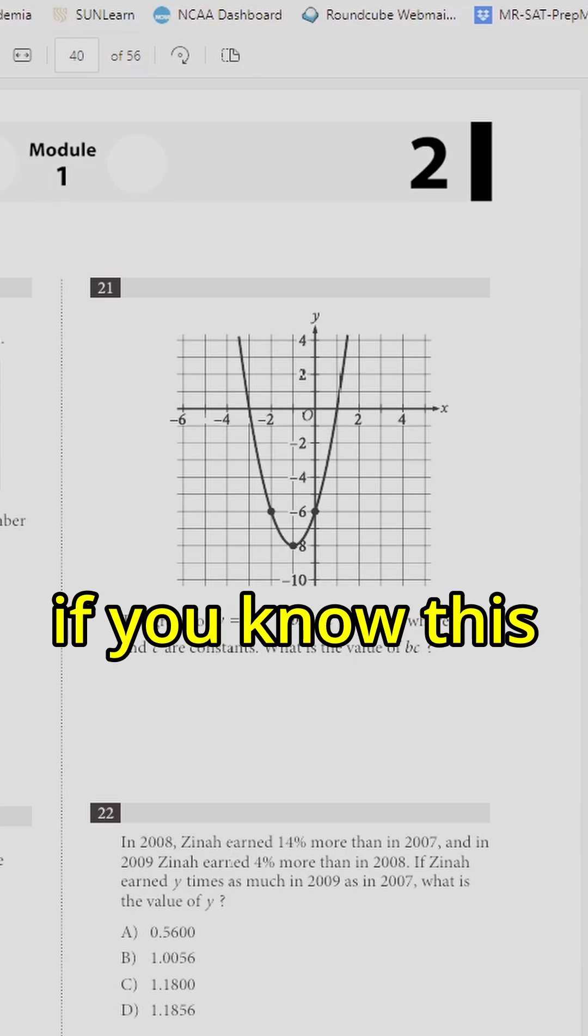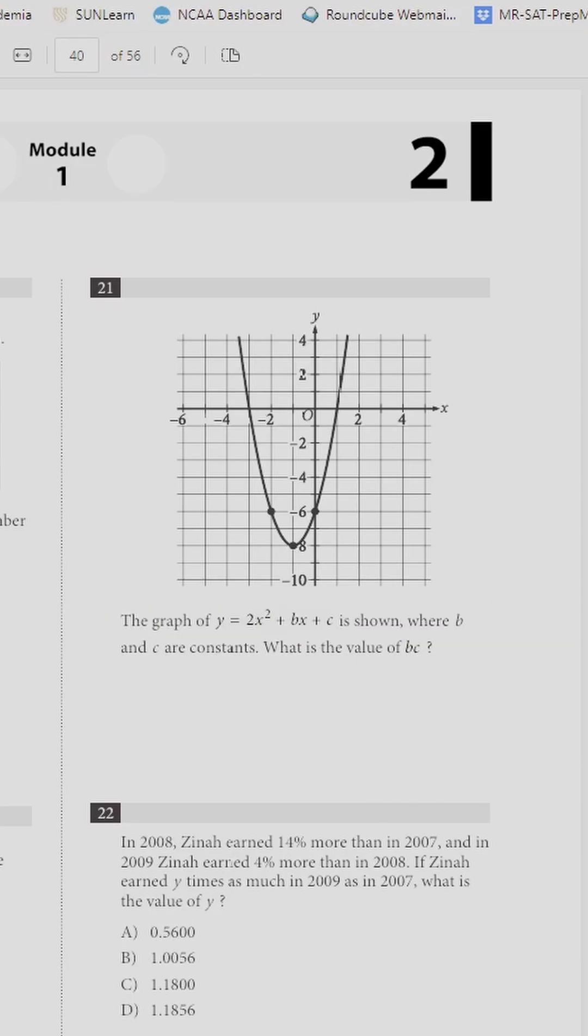Look at how easy the SAT is if you know this vertex formula. The graph of y = 2x² + bx + c is shown, where b and c are constants. What is the value of bc?